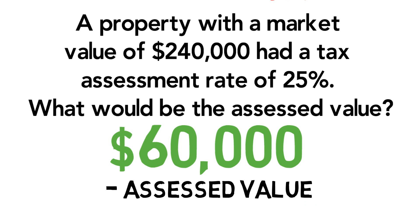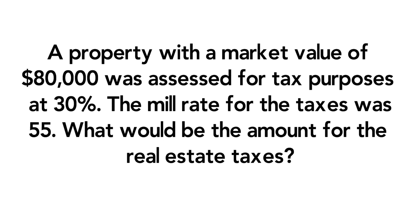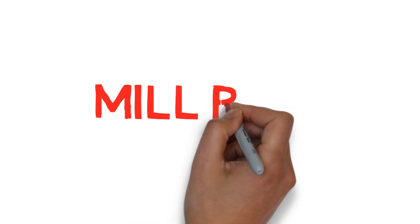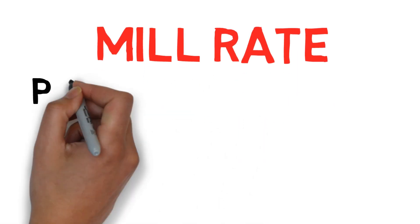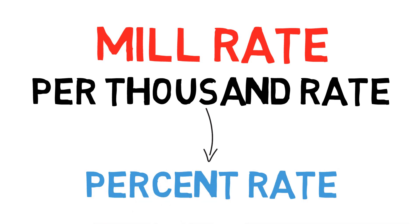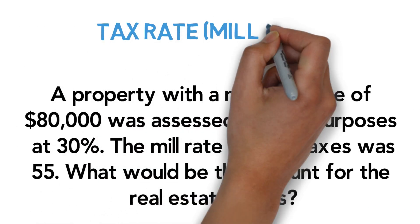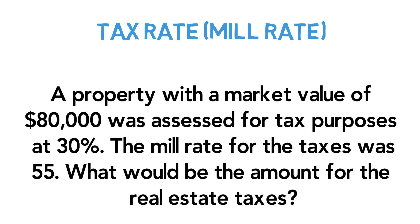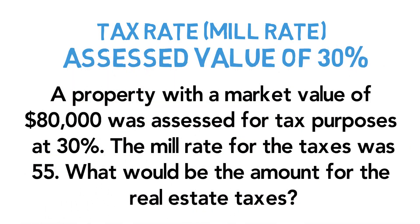A property with a market value of eighty thousand was assessed for tax purposes at thirty percent. The mill rate for the taxes was fifty-five. What would be the amount for the real estate taxes? A mill rate is a per-thousand rate, meaning taxes are based on a per-thousand of value. We will convert that to a percent rate to use in our T formula. So we have a tax rate and an assessed value rate of thirty percent — two percentages, which means we draw two Ts.